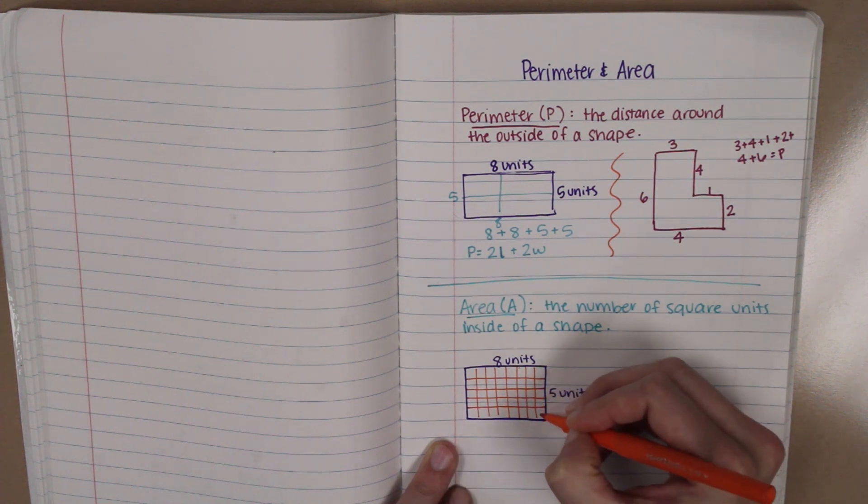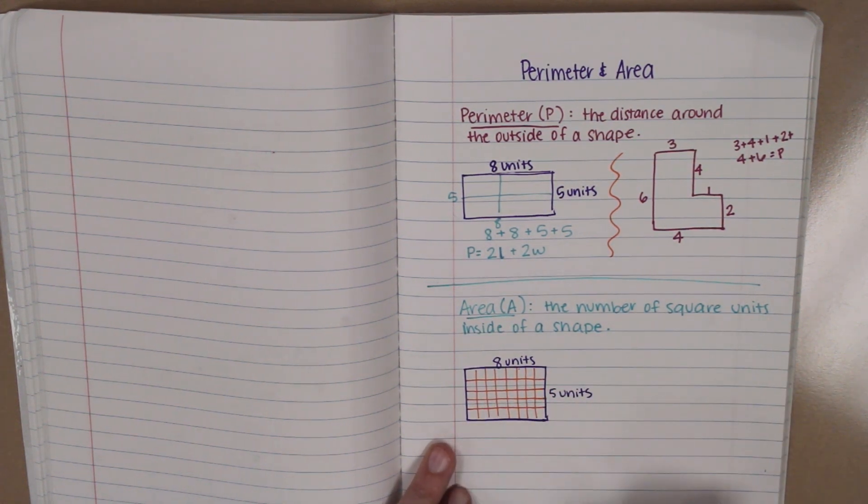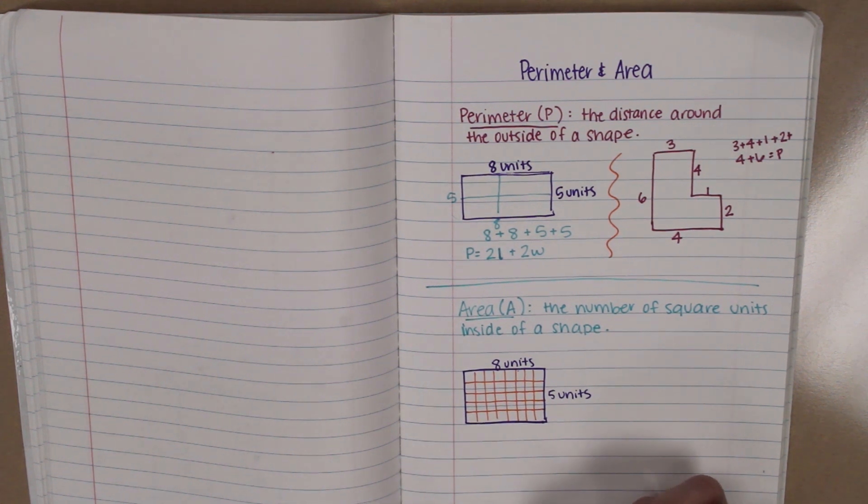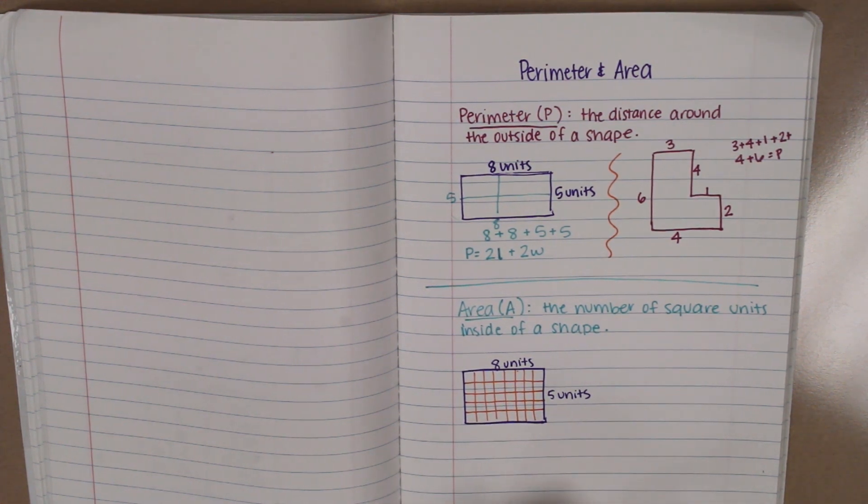And five units going down. One, two, three, four, five. If you were to take all the time to count up all those teeny tiny squares, it would get you the area, which in this case is 40. But there is a shortcut,